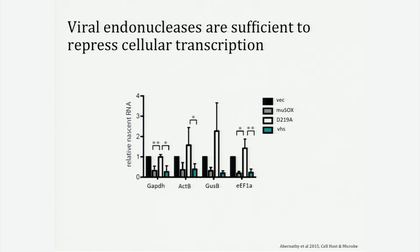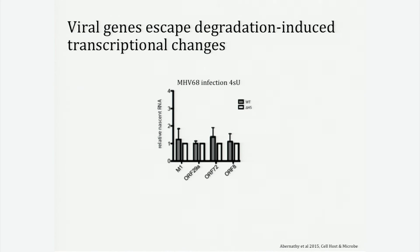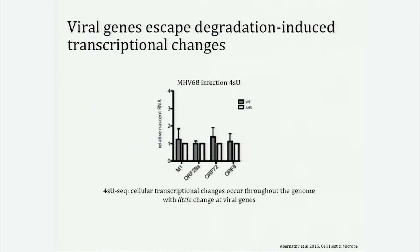What does this transcriptional repression at cellular genes mean for the virus? We looked at viral genes using 4SU and found that in a wild-type or delta HS infection, nascent mRNA levels are very similar and basically unchanged. Deep sequencing of 4SU libraries revealed that while changes are occurring throughout the cellular transcriptome, there are very little changes to the viral genes. This really suggests that the virus is able to escape this transcriptional downregulation at cellular genes, and may actually benefit from the decrease in transcription of those genes.